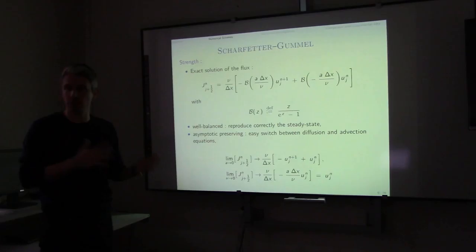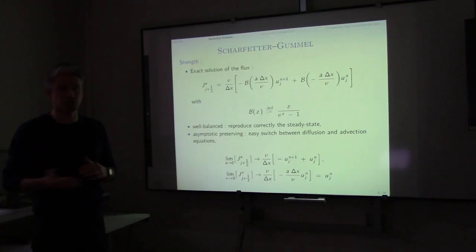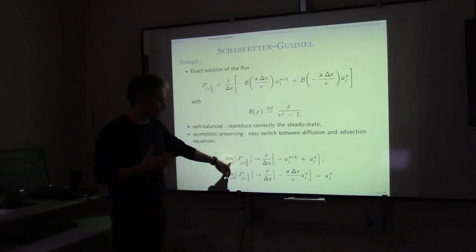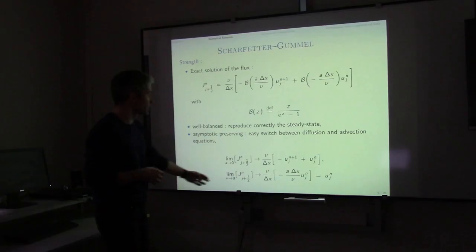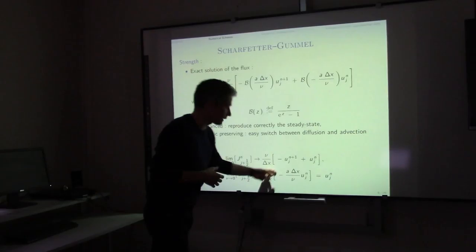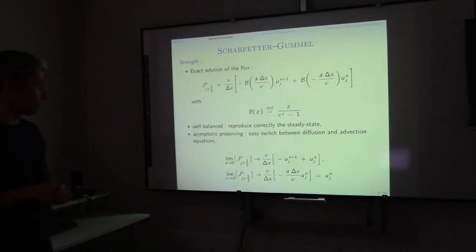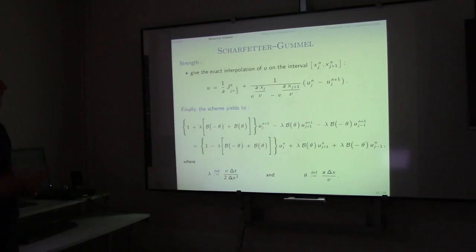What is interesting about this expression is that we can correctly reproduce a steady state. The scheme is what we call asymptotic preserving: we can switch easily between the diffusion and advection regimes. When advection tends to zero, we recover the classical discretization of the diffusion equation. When diffusion tends to zero, we recover the classical discretization of the advection term.